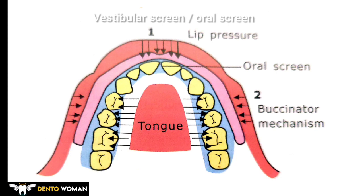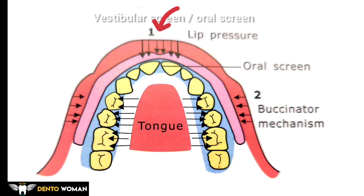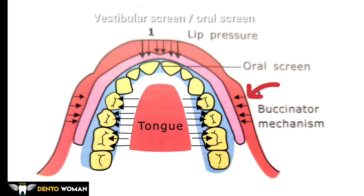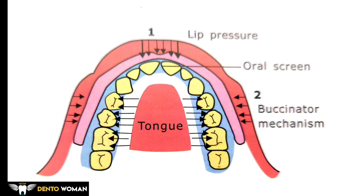This diagram shows the mechanism of action of the oral screen. In region 1, the oral screen contacts the anterior teeth and lip pressure is transmitted through the oral screen to anterior teeth, correcting proclination. In region 2, the posterior or molar region, the buccinator mechanism is shielded away by the oral screen, so tongue pressure exerts an outward thrust on the dentition, expanding the arches.